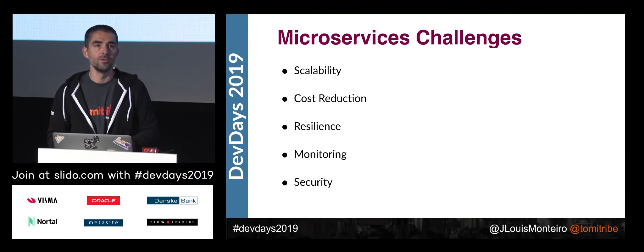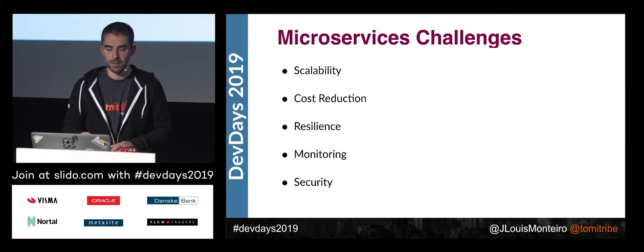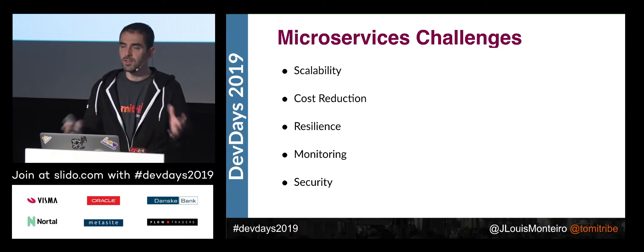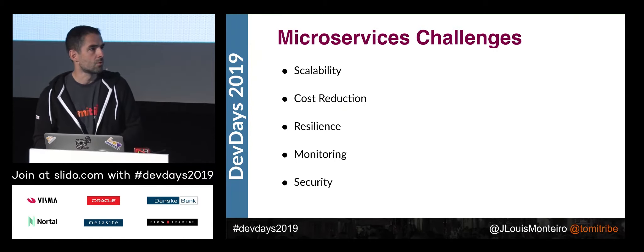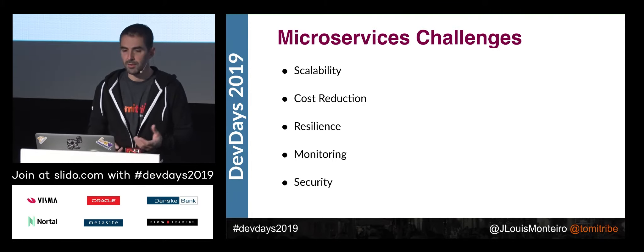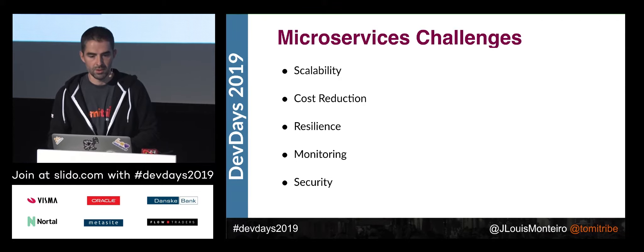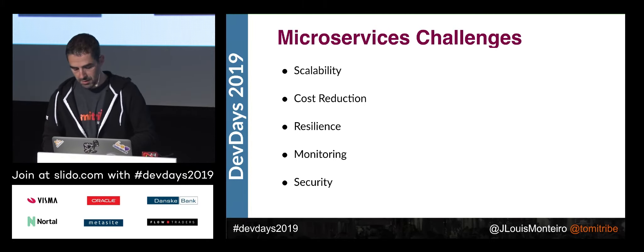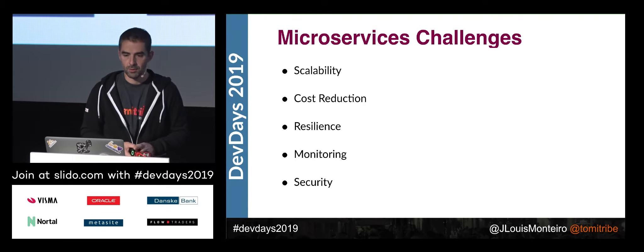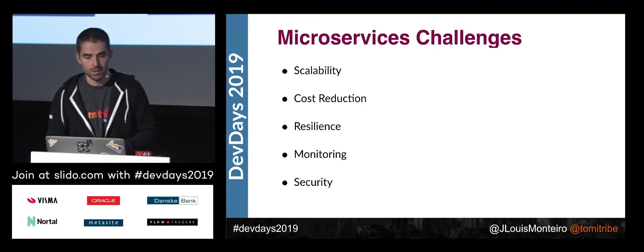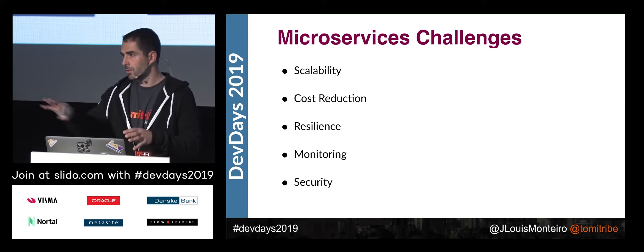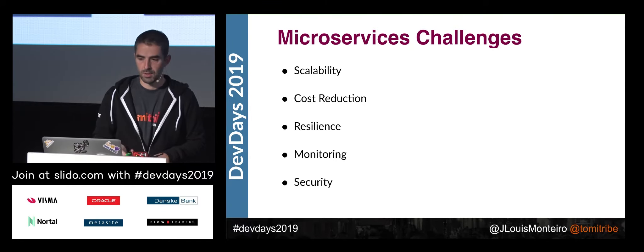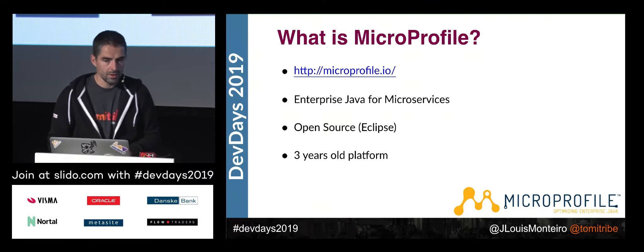The network brings a couple of new challenges. Resilience is one of them, because one service might not be available. If you are running a monolith, either the whole thing is down or it's working, but in the microservices world you may have just one service down and you have to work around it and still deliver your service. Monitoring is another one — tracking calls with correlation IDs is even more important when you have a lot of machines and services involved. And obviously security is an important one as well.